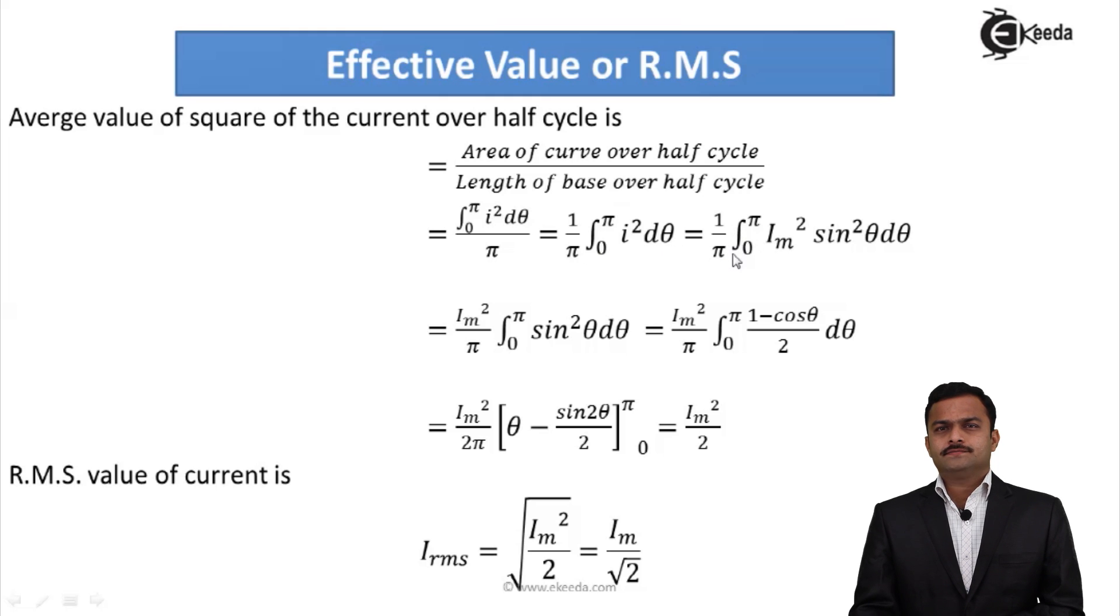Then 1 upon π, 0 to π is the limit for integral. We know I is I_m sin θ and squaring is I_m² sin² θ dθ. We know sin² θ is given by (1 - cos 2θ)/2. So I have replaced that, and the constant I will take out of integration. So I will get this expression: I_m²/π integral 0 to π of (1 - cos 2θ)/2 dθ. If I take 1/2 common, integral of 1 is θ.